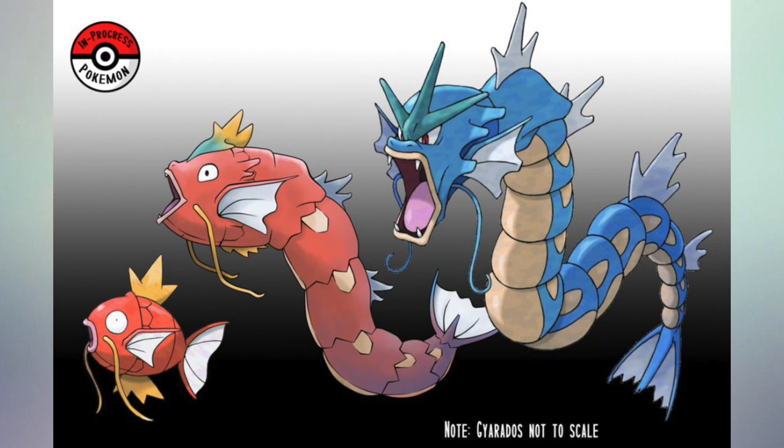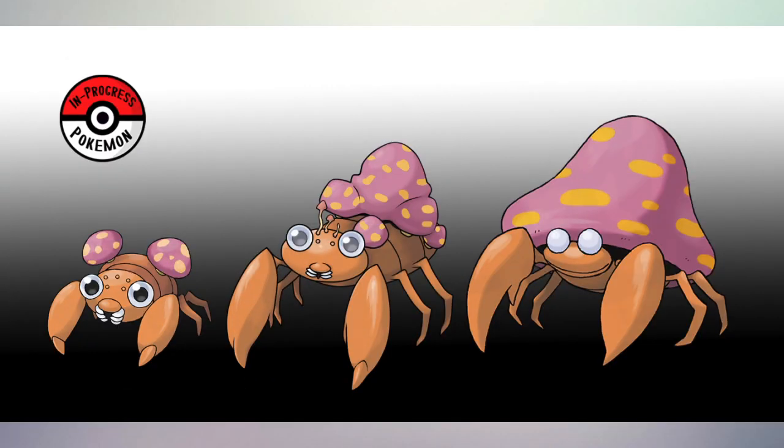Next up is the evolution between Magikarp and Gyarados. Magikarp is a fish that turns into a fierce dragon serpent-type Pokemon, which is a very drastic change. The middle evolution kind of shows the connection between Magikarp and Gyarados. The picture could have been done a little better in my opinion, but it still gets one thumbs up — only one, not two.